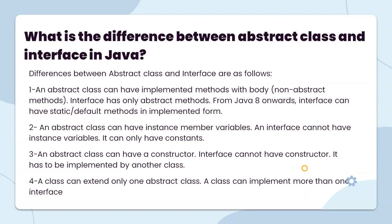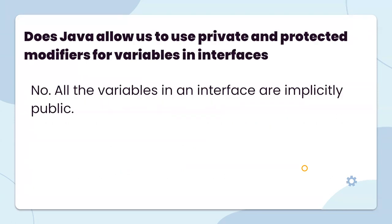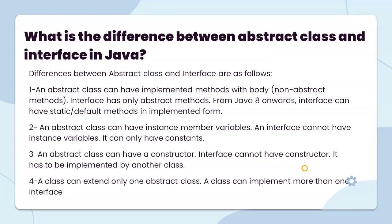What is the difference between an abstract class and an interface? First, an abstract class can have implemented methods with a body, while an interface has only abstract methods — from Java 8 onwards, interfaces also support static and default methods. Second, an abstract class can have instance member variables, but an interface cannot — it can only have constants. Third, an abstract class can have a constructor, but an interface cannot. Also, a class can extend only one abstract class, but a class can implement more than one interface.